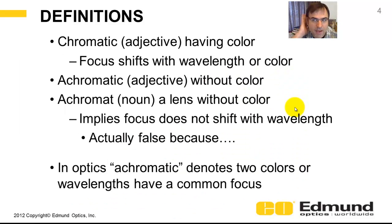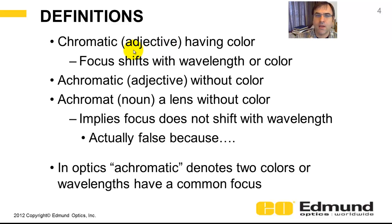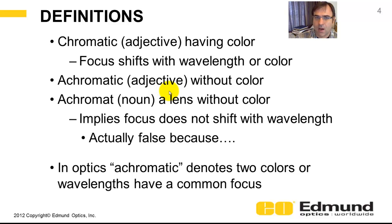Some definitions. Chromatic is an adjective, and the root meaning is that it has color — or that focus shifts with wavelength. Likewise, achromatic means without color. The noun version, achromatic, like a lens — either a doublet or a full optical system — is without color, which implies that the focus doesn't shift with wavelength. But that's false, because in optics, achromatic actually denotes two wavelengths having a common focus, and the other wavelengths go elsewhere.